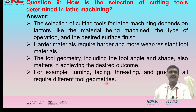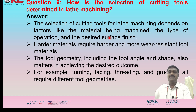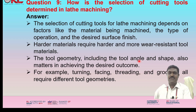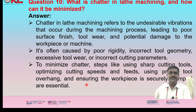How is the selection of cutting tools determined in lathe machining? The selection of cutting tools depends on factors like the material being machined, the type of operation, and the desired surface finish. Harder materials require harder and more wear-resistant tool materials. The tool geometry, including the tool angle and shape, also matters. For example, turning, facing, threading, and grooving all require different tool geometries.